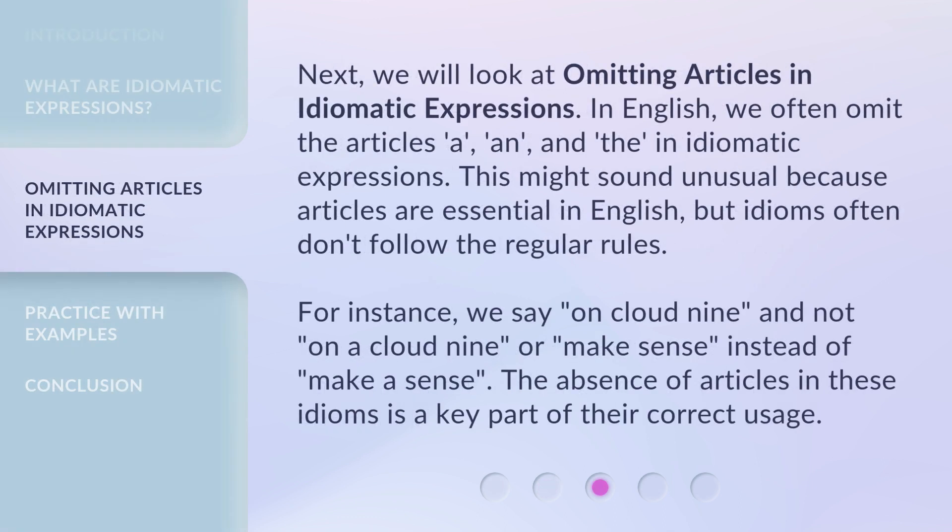Next, we will look at omitting articles in idiomatic expressions. In English, we often omit the articles 'a,' 'an,' and 'the' in idiomatic expressions. This might sound unusual because articles are essential in English, but idioms often don't follow the regular rules. For instance, we say 'on cloud nine,' and not 'on a cloud nine,' or 'make sense' instead of 'make a sense.' The absence of articles in these idioms is a key part of their correct usage.